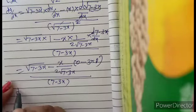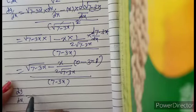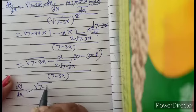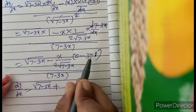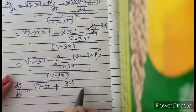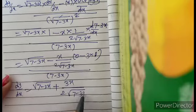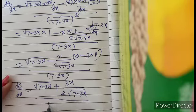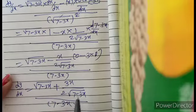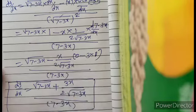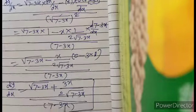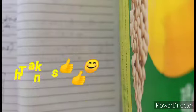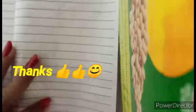Therefore dy/dx equals √(7-3x) minus x·(-3/(2√(7-3x))), over (7-3x). Simplifying, this gives √(7-3x) + 3x/(2√(7-3x)), all over (7-3x). This is the final derivative of the given function. Some more examples will be attached in the description box. If you have any doubts, please comment in the comment box. Thank you.